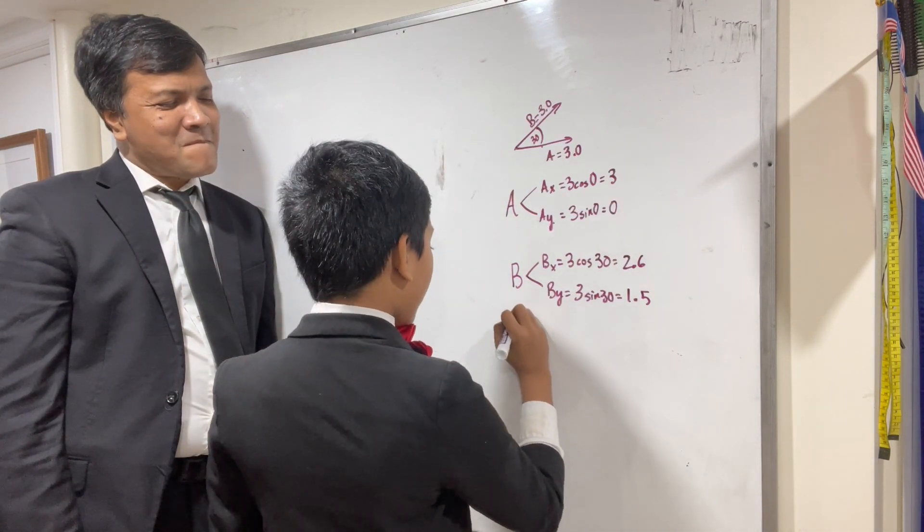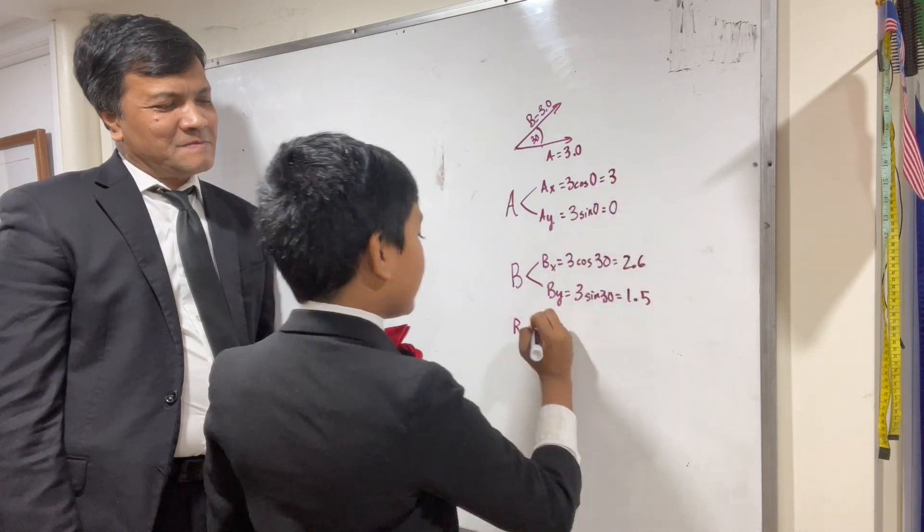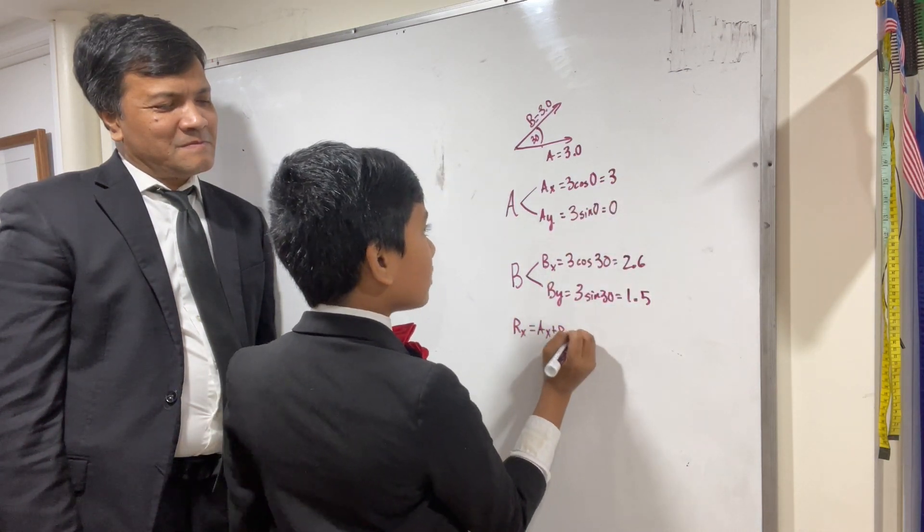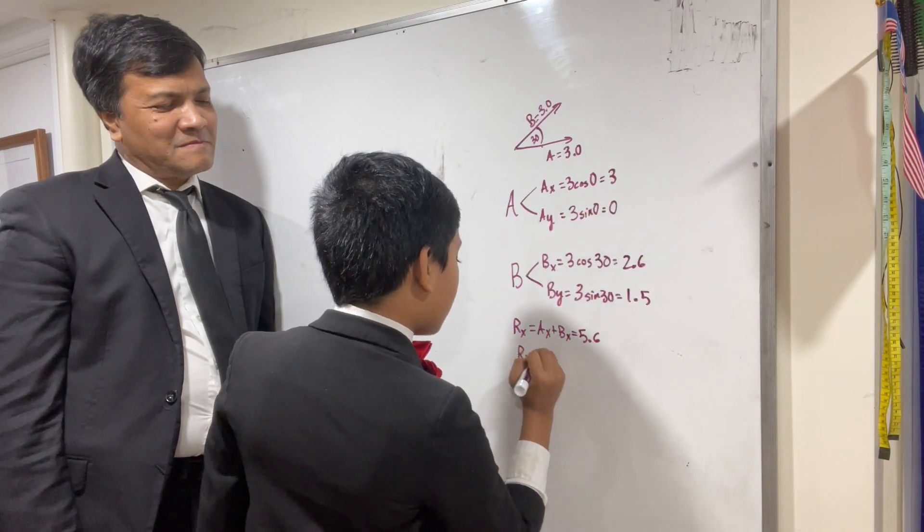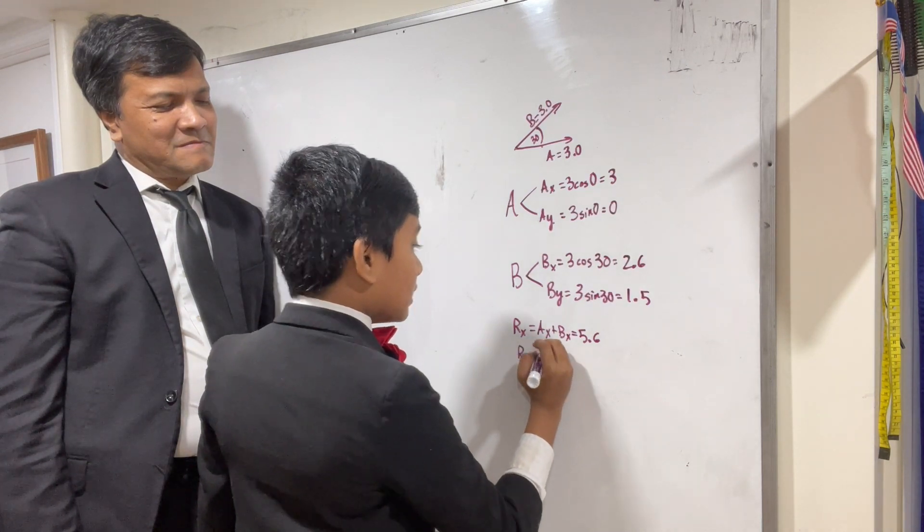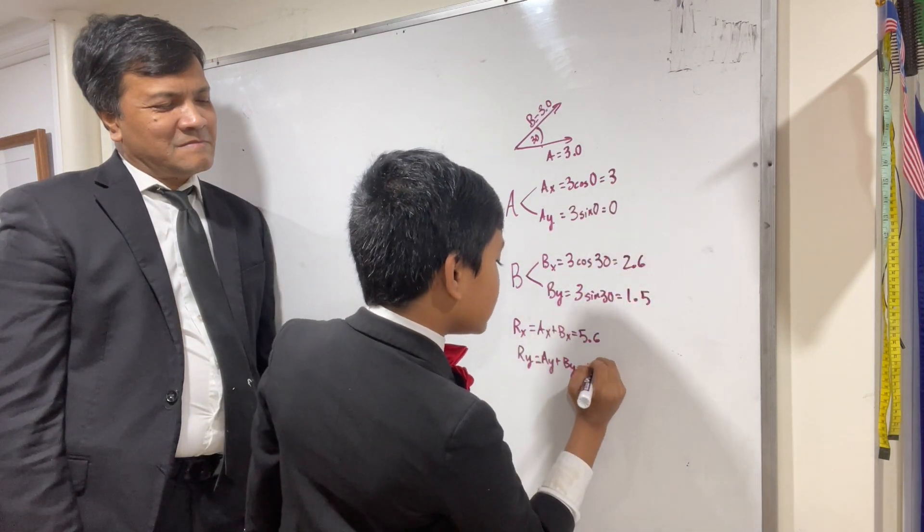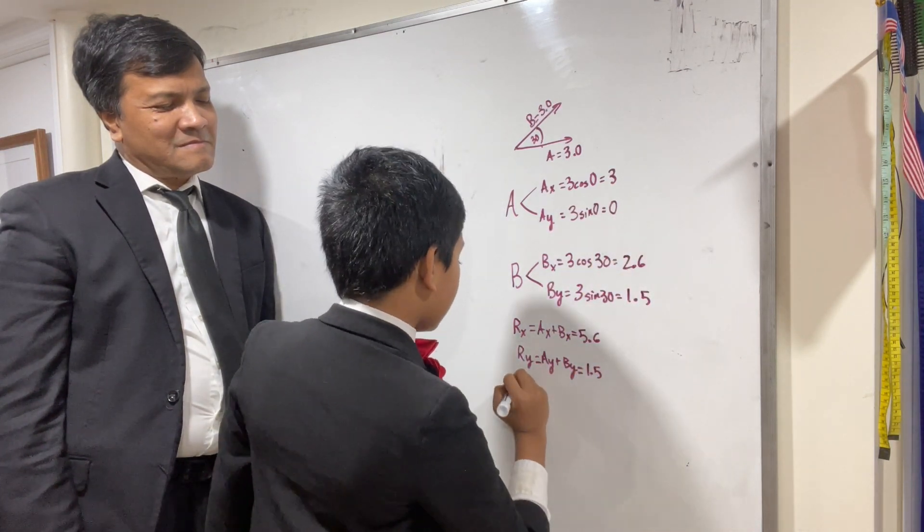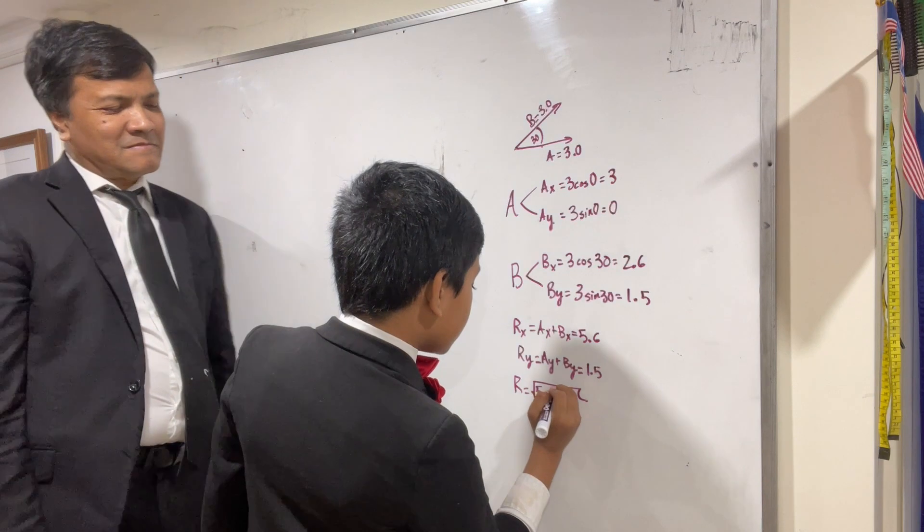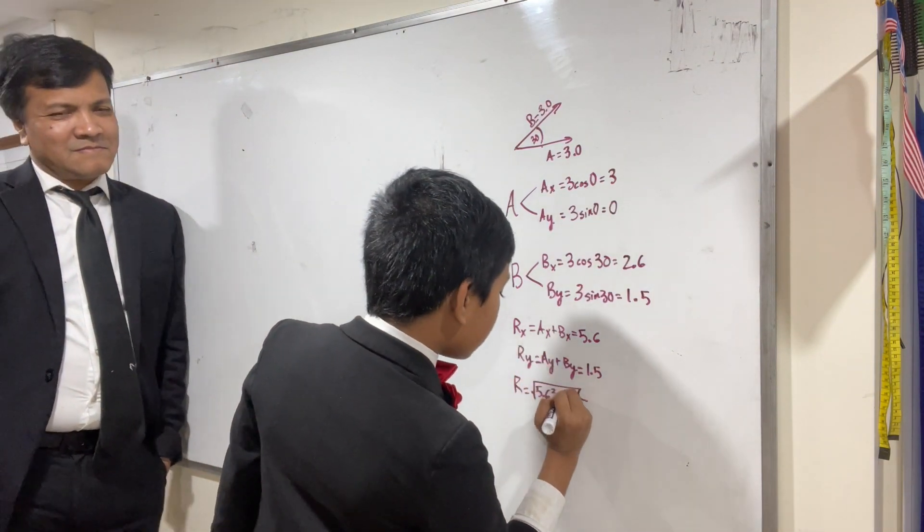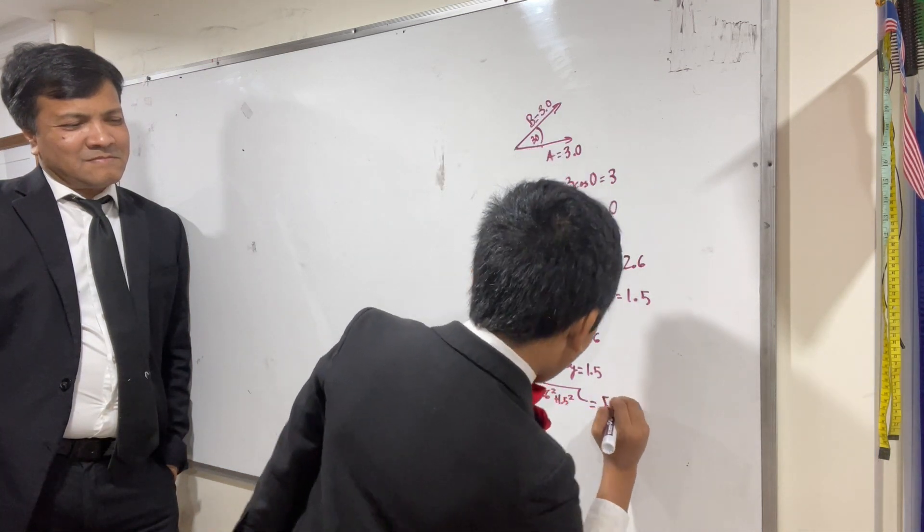So now, to find the resultant x component, you just add Ax plus Bx. And what's that? 3 plus 2.6 is 5.6. Then the resultant y component is Ay plus By. 0 plus 1.5 is just 1.5. And the resultant, using the Pythagorean theorem, is the square root of the resultant x component squared plus the resultant y component squared. Using the calculator, you get 5.8.